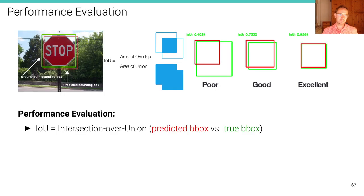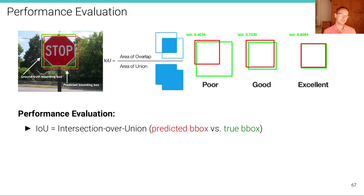Before we go into algorithms, let's discuss how we can measure the performance of such an algorithm. In classification and semantic segmentation, we can use accuracy, but even there accuracy is not enough, so we've talked about intersection over union. That's also the metric we're going to use in object detection. Let's look in more detail at what intersection over union means, in this case for bounding boxes — though you can do the same thing for masks.